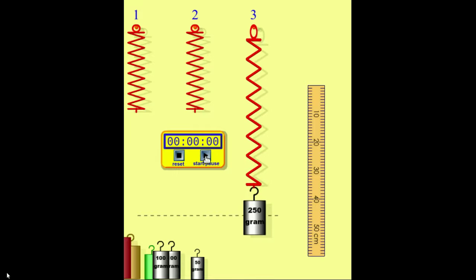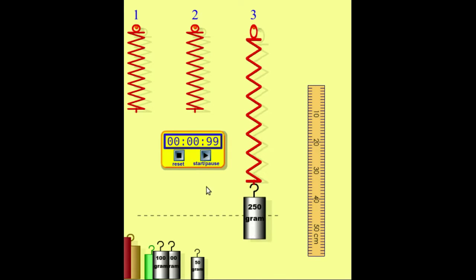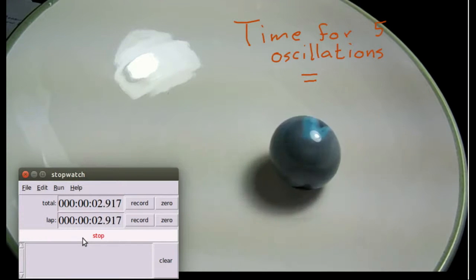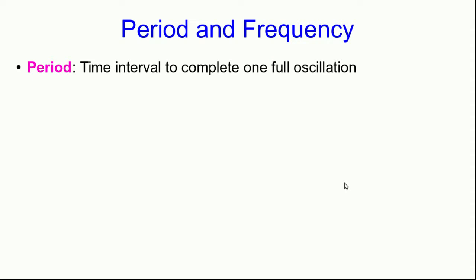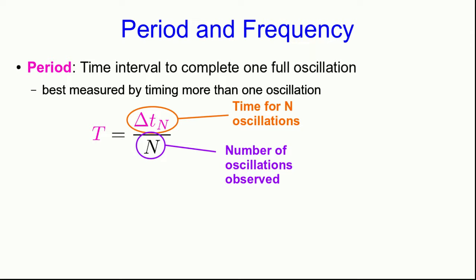The period is the time for a full oscillation — a return to an initial state. For example, I can time the period of this mass on a spring from the top of its motion until the next time it's at the top of its motion. Equivalently, I could time it from when it passes through that dotted line going down until the next time it passes through that line going down, and I get the same result both ways. Of course, if you're actually doing a timing to determine a period, you shouldn't just time one period — that's poor precision. You should time multiple oscillations and divide by how many oscillations have occurred. Counting zero, one, two, three, four, five — we now know the time for five oscillations and can easily get the period. So you calculate the period by measuring the time for n oscillations and dividing by n.